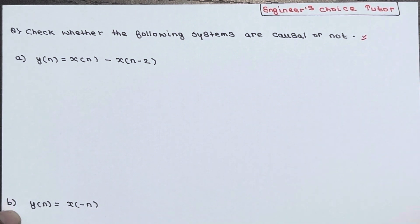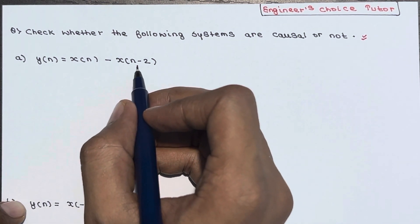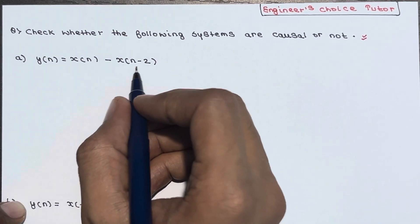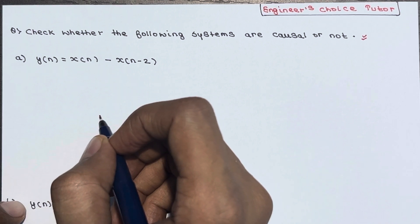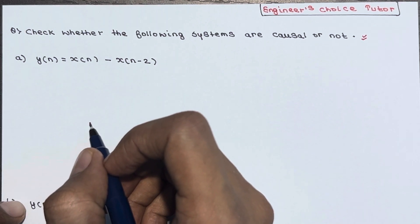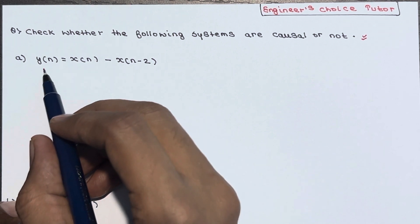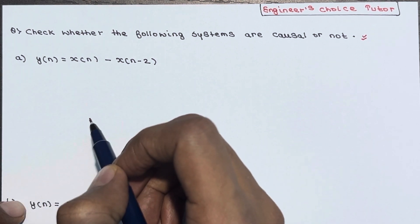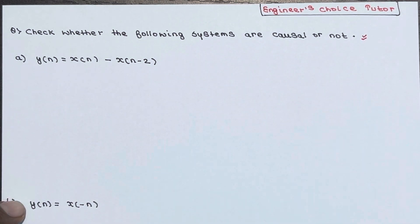The system equation is given as y(n) = x(n) - x(n-2). Just by seeing this, you can say it is a causal system. Because x(n-2) is a past input term and x(n) is the present input. So the output depends upon present input as well as past input — it is a causal system.